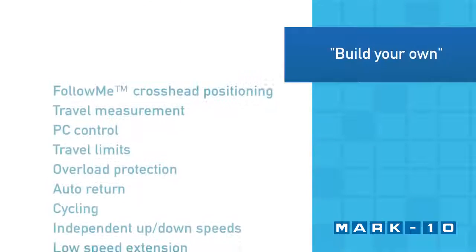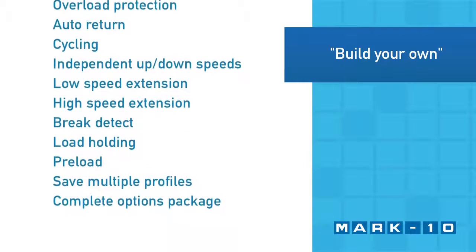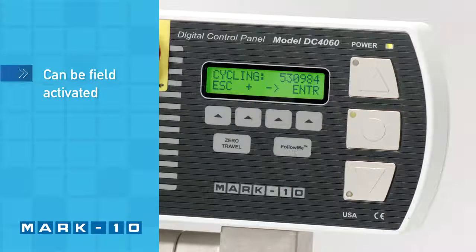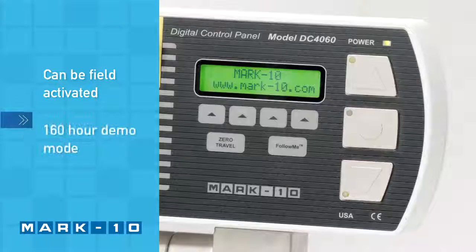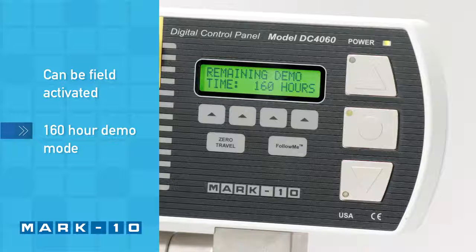The ESM-303 can be custom configured to your needs and budget through its unique function configuration platform. Functions not originally ordered can be enabled in the field by inputting an activation code. All functions are temporarily enabled for a 160-hour demo period.